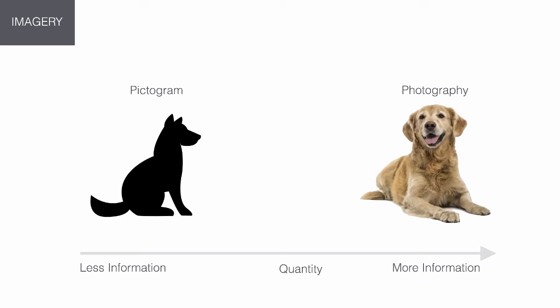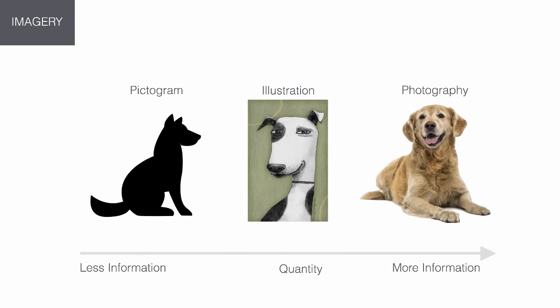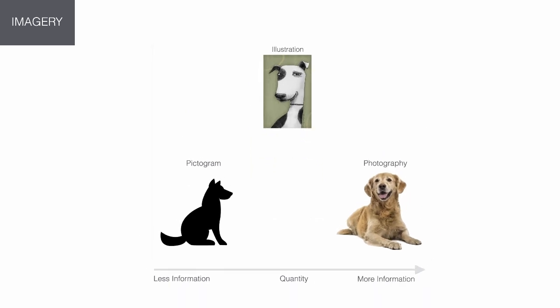But imagery gives us more than just a quantity of information. An image like an illustration gives us more — it introduces a qualitative difference. It suggests an interpretation, a human perspective, a human hand. That individual stylization and idiosyncratic vision suggest an individual. This is when imagery can really start to become interesting. It's important to remember that graphic design is a creative pursuit, and this is your opportunity to flex some creative muscles.